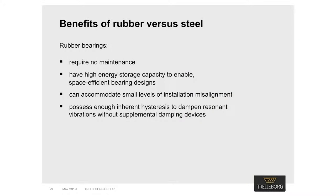Buildings such as concert halls or recording studios are considered the sole preserve of steel spring designs, but rubber is just as competitive and actually offers a number of benefits over steel. Steel shim plates placed inside a laminated bearing are fully encapsulated in rubber, which provides a protective barrier against corrosion, eliminating the need for maintenance. The large strains that natural rubber can accommodate mean that the material has a high energy storage capacity, which enables compact, space-efficient bearing designs. Rubber bearings can accommodate a certain amount of misalignment between the top and bottom mating faces and are relatively easy to install. Natural rubber possesses enough hysteresis to dampen resonant vibrations without the need for supplemental damping devices.